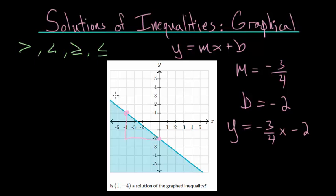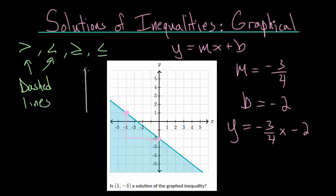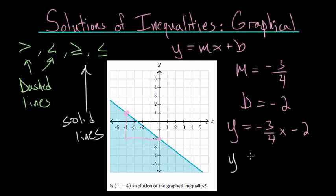For this scenario, since we're looking at below the line, it's going to be less than or equal to. The reason it's also equal to is because the line is solid. When the line is dashed, you're dealing with strict greater than or less than — those will be dashed lines — whereas greater than or equal to and less than or equal to will be solid lines. So while this is the equation of the line, the inequality — since we're shading below — means y is less than or equal to -¾x - 2. That also means points on the line are included in the inequality.